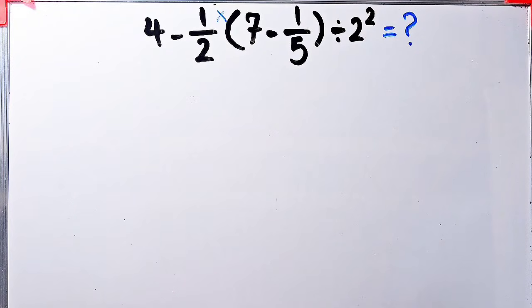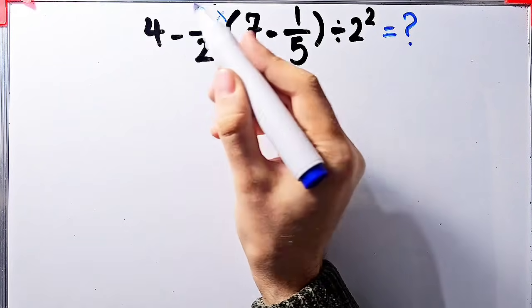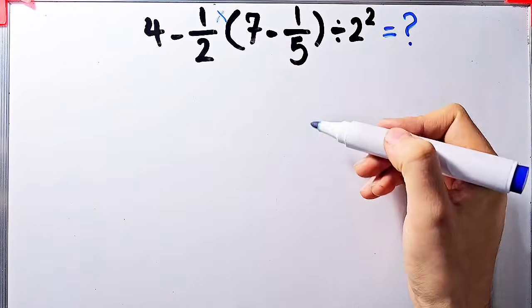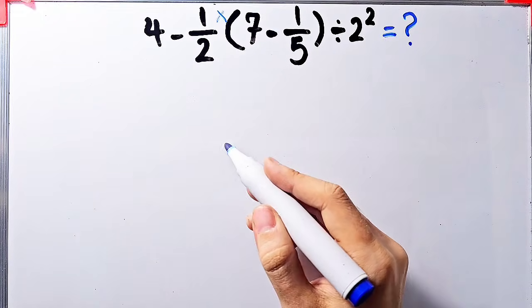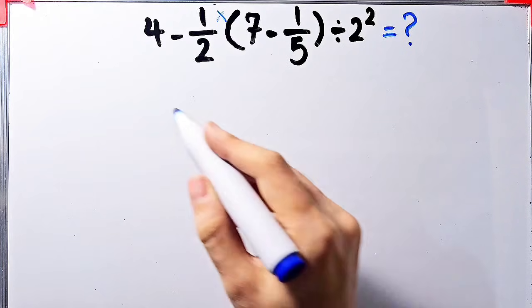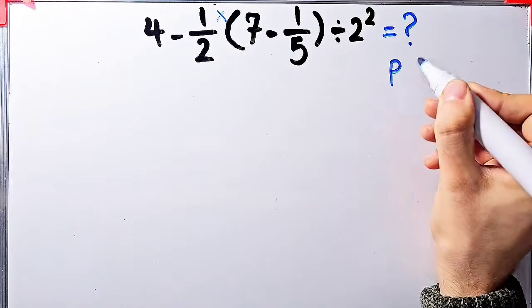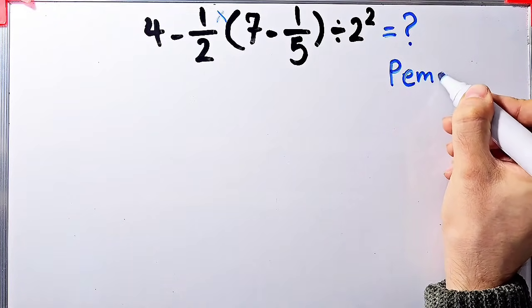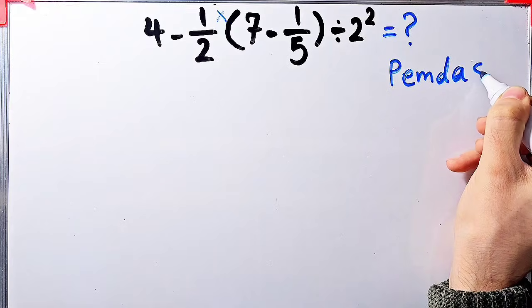What is the answer of this question? In this question, we have subtraction, multiplication, parentheses, division, and exponents. Again, to solve this question, we need to follow the PEMDAS rule. PEMDAS shows the priority of the mathematical operations.